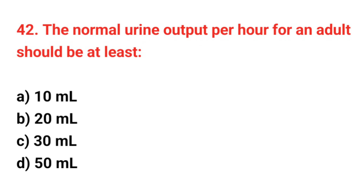Question number 42: The normal urine output per hour for an adult should be at least? The right answer is option C: 30 mL.